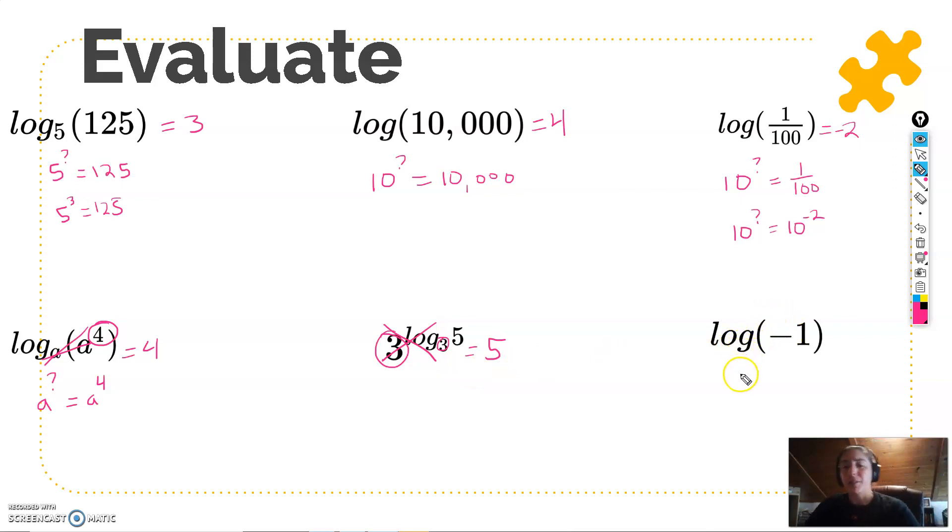What about this one? What about log of negative 1? So there is no base, so it's 10. So 10 to what power is equal to negative 1? Well, we saw that when we raised 10 to negative powers, we get fractions, but they were still positive fractions. So 10 to the negative 3rd would be 1 over 1,000. 10 to the negative 4 would be 1 over 10,000. But these are all still positive. And then 10 to any positive number would just give me really big numbers, like 10, 100, 1,000, 10,000, 100,000, million, so on and so on.